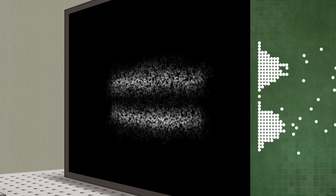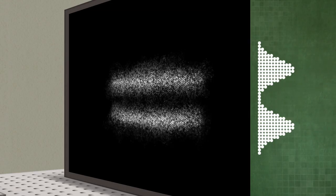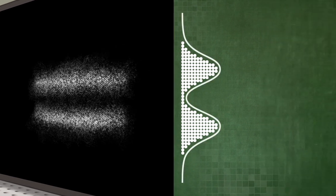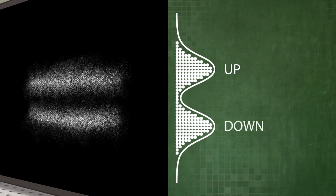However, the researchers observed that the beam was split in two possible states, which were later named spin-up and spin-down.